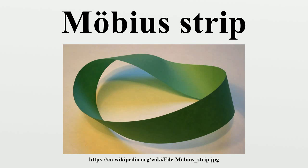It is a standard example of a surface that is not orientable. In fact, the Möbius Strip is the epitome of the topological phenomenon of non-orientability. This is because: first, two-dimensional shapes are the lowest dimensional shapes for which non-orientability is possible; and second, the Möbius Strip is the only surface that is topologically a subspace of every non-orientable surface. As a result, every surface is non-orientable if and only if it contains a Möbius band as a subspace.